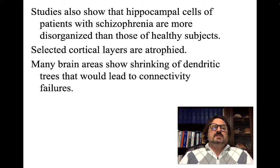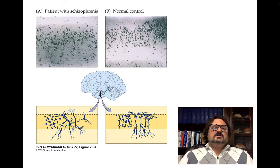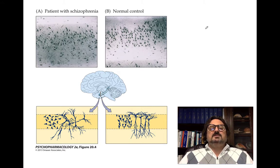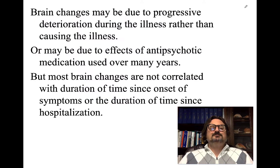Studies also show hippocampal cells of patients with schizophrenia are more disorganized than those of healthy subjects, and selected cortical layers are atrophied. Many brain areas show shrinking of dendritic trees leading to connectivity failures. You can see disorganized pyramidal cells in the schizophrenic brain — they point in every which direction — compared to the nicely organized, uniformly oriented cells in a normal control, particularly in the hippocampus.